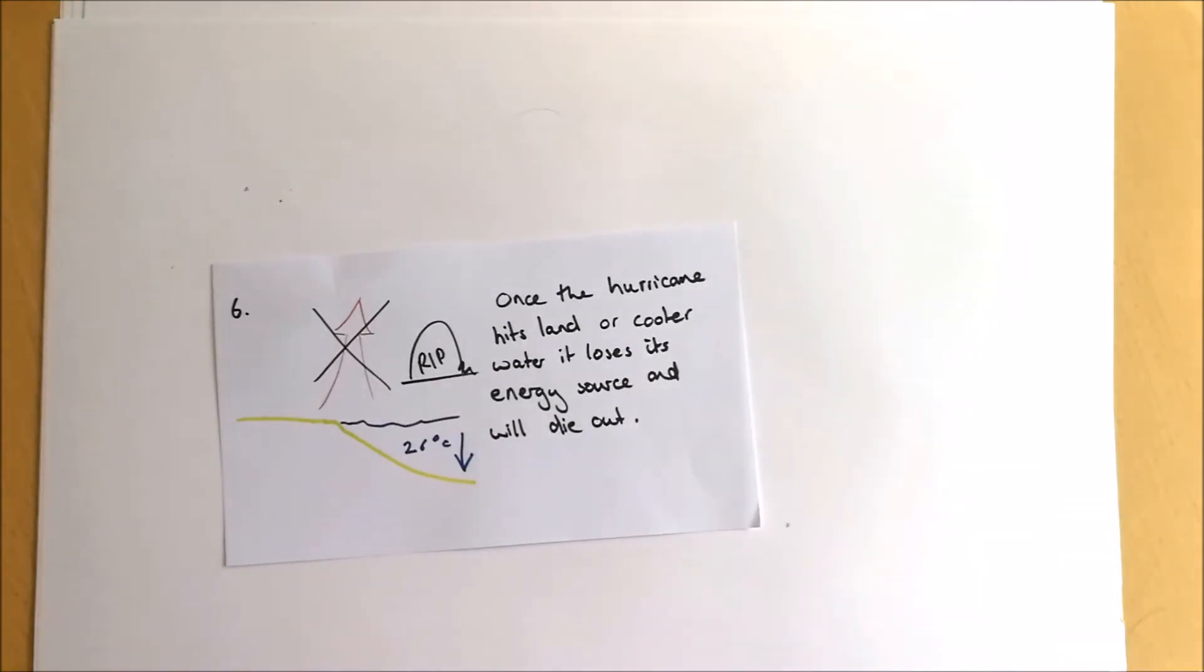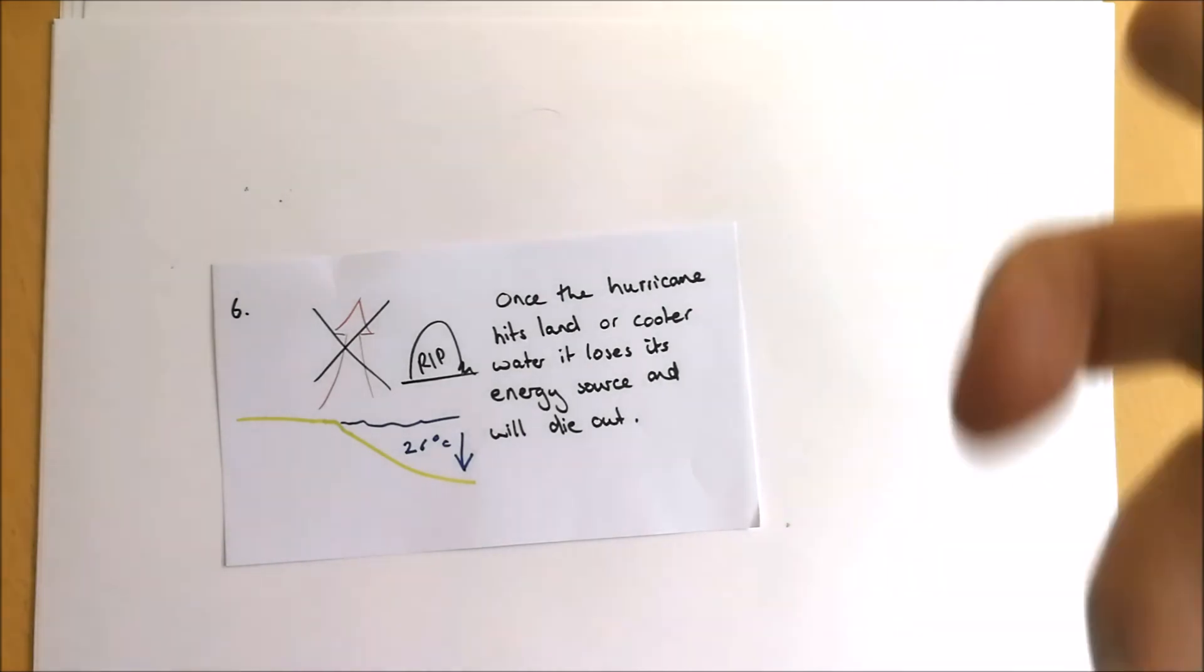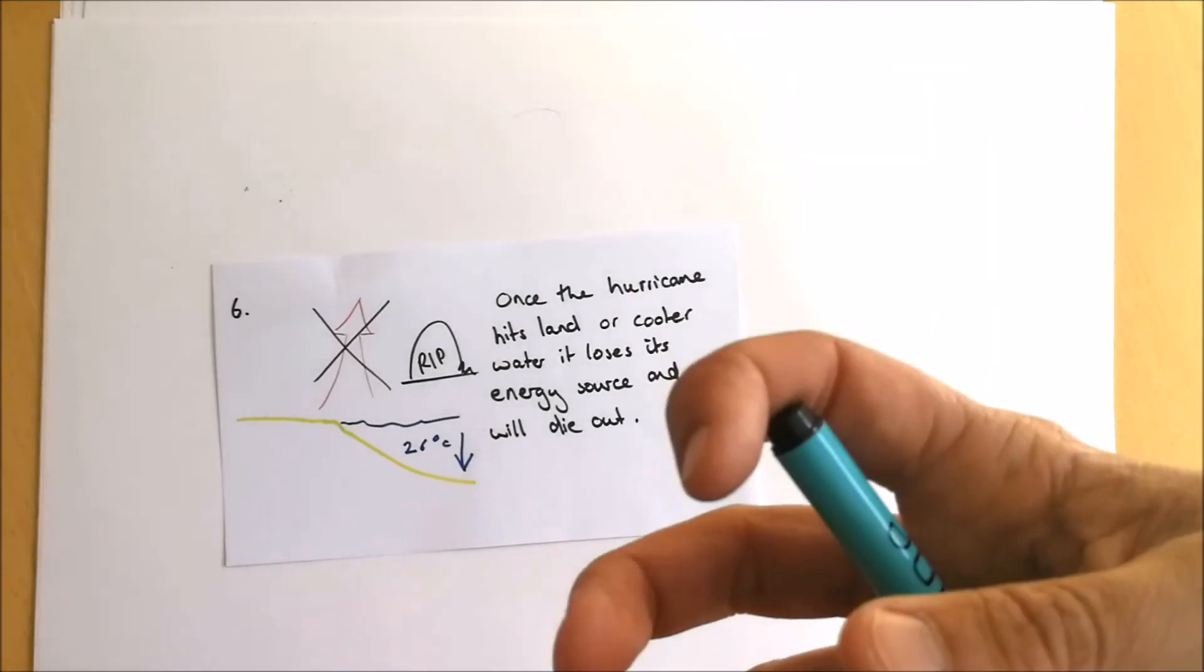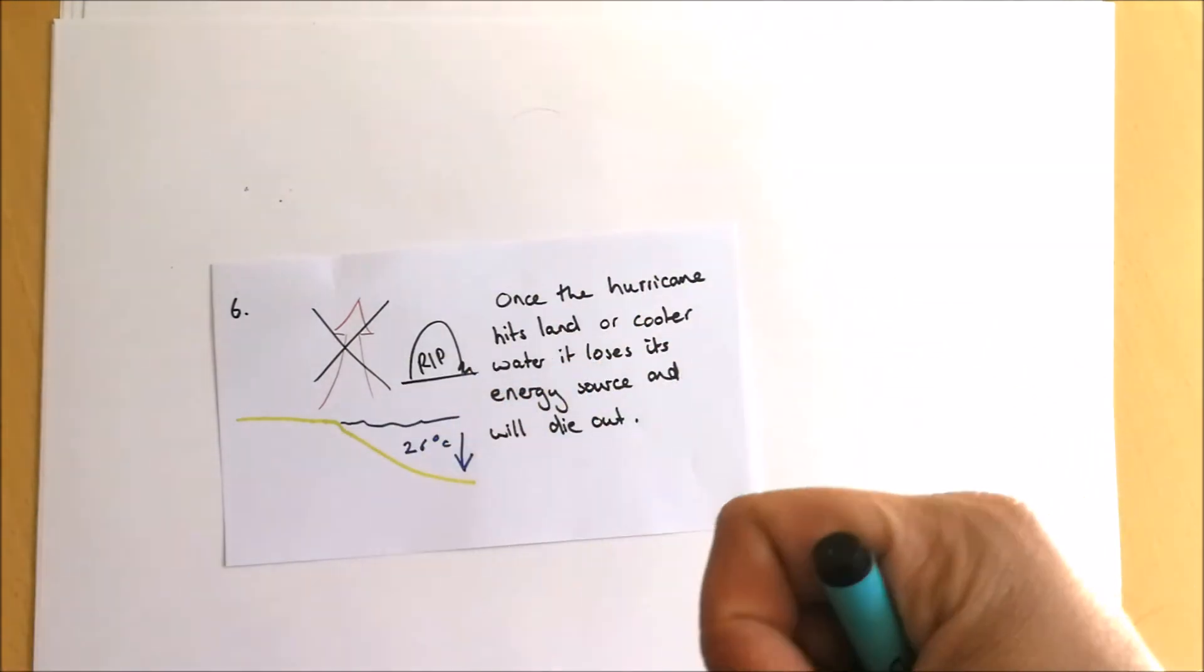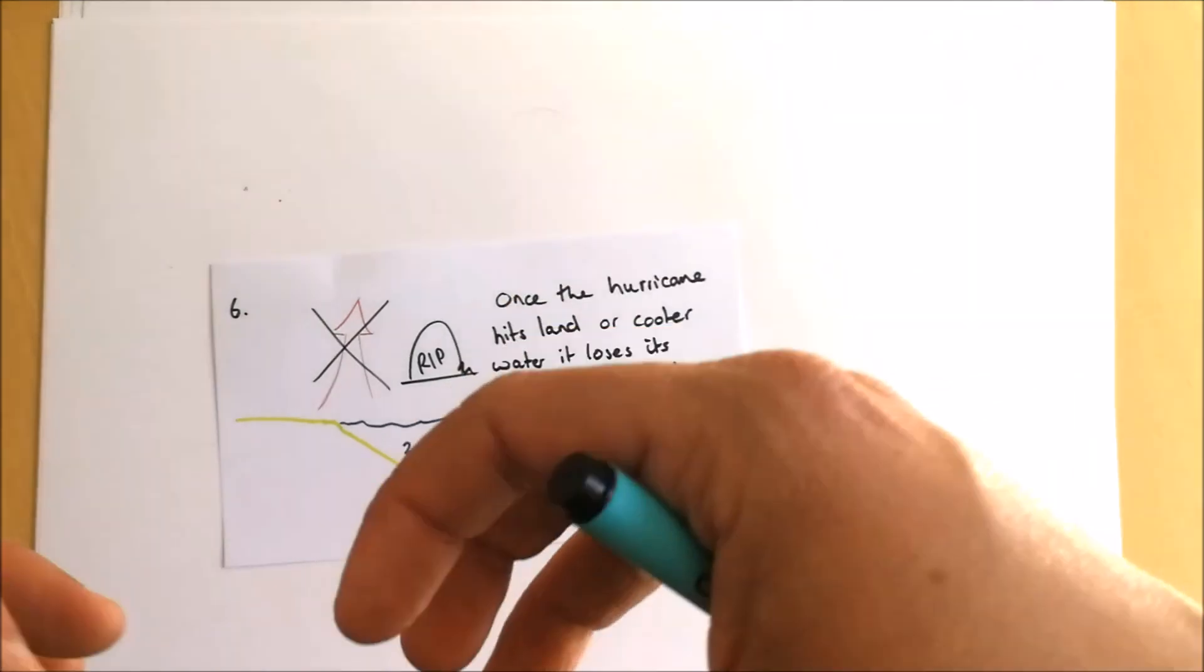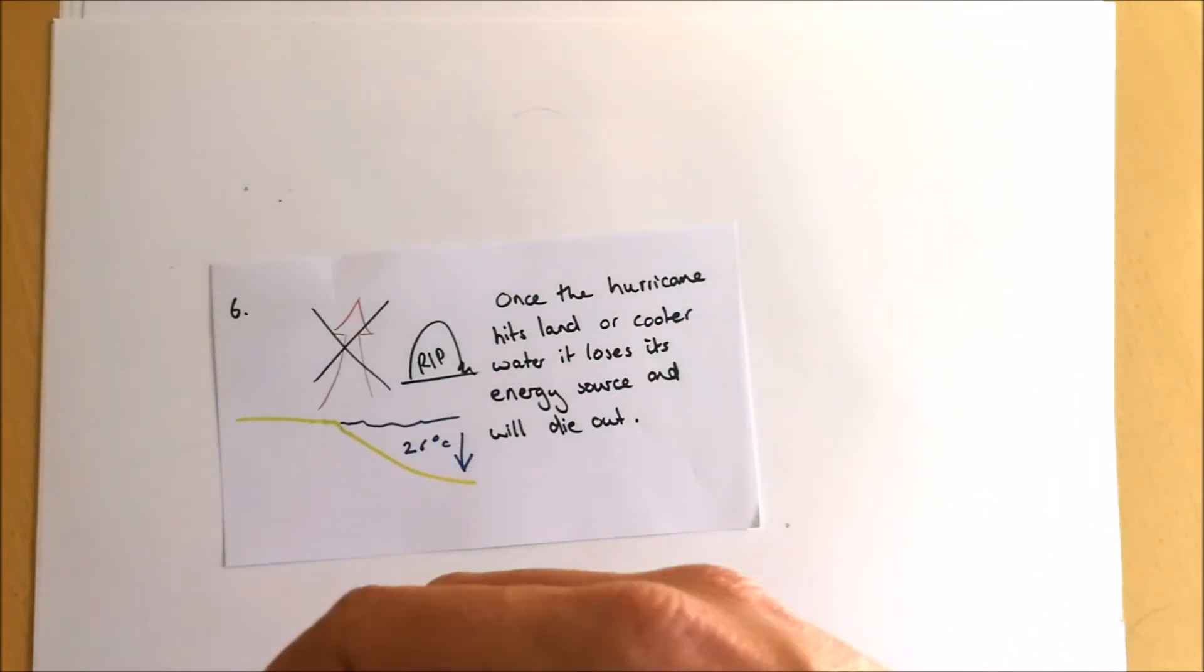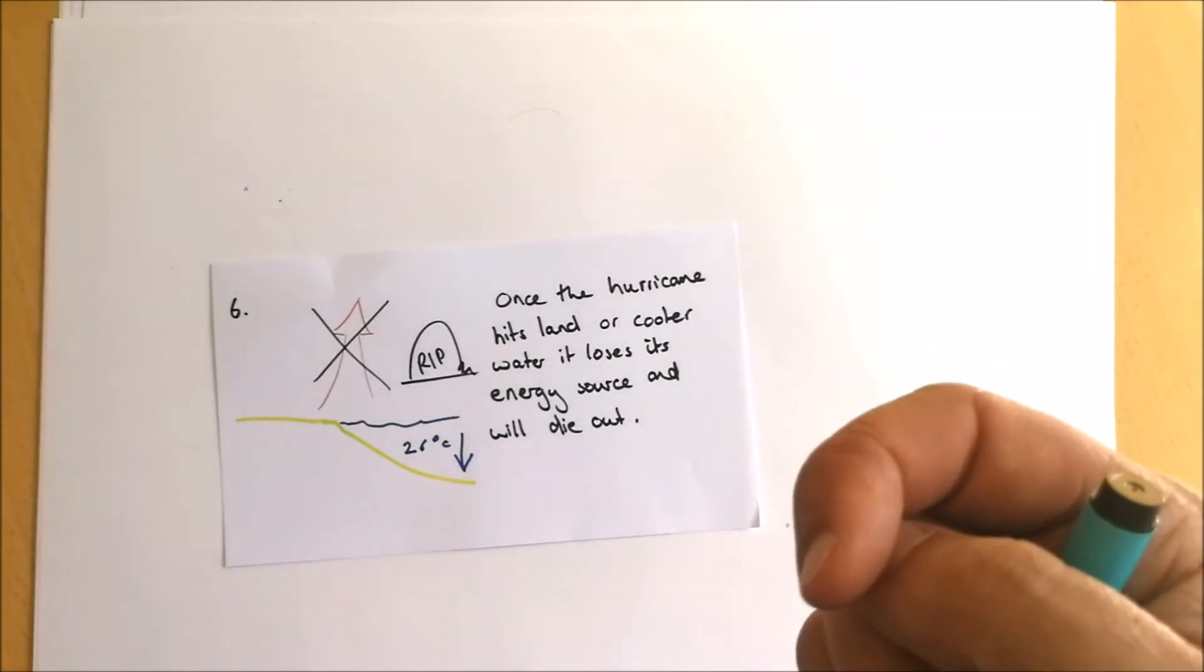As long as the storm stays over that warm water, it will continue to grow in size. The constant rising air followed by the process of condensation releasing that latent energy will continue to build larger and larger cumulonimbus storm clouds. As I said, that eye becomes more and more stable but with more and more intense rainfall and precipitation bands outside of that spiraling around it due to the Coriolis force.